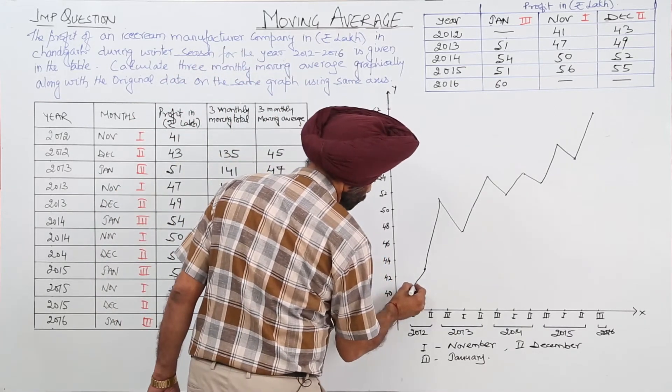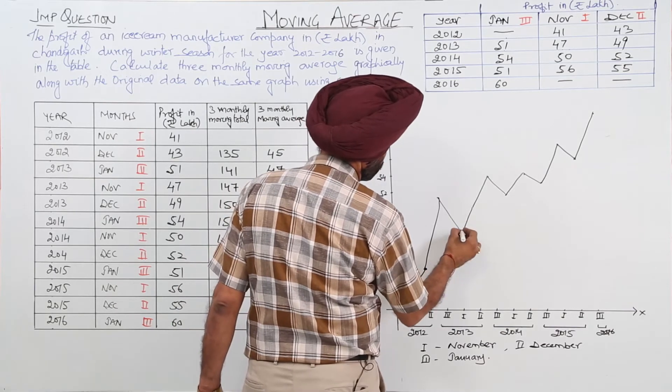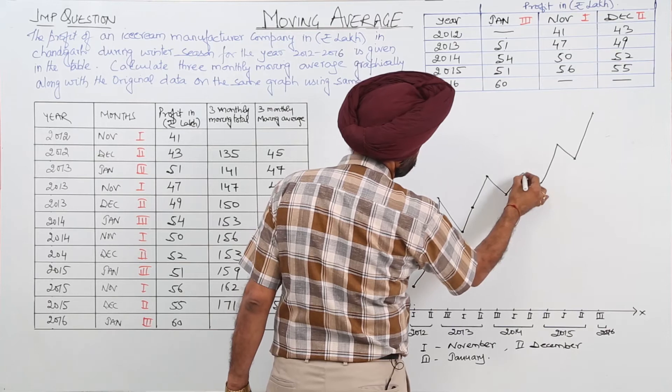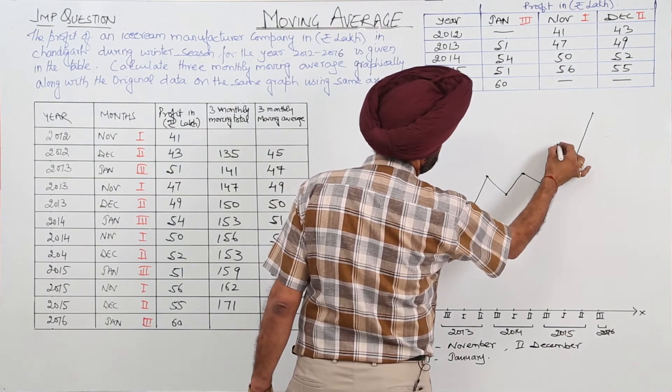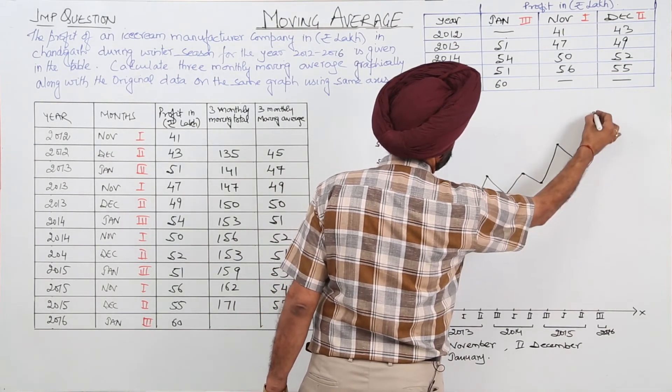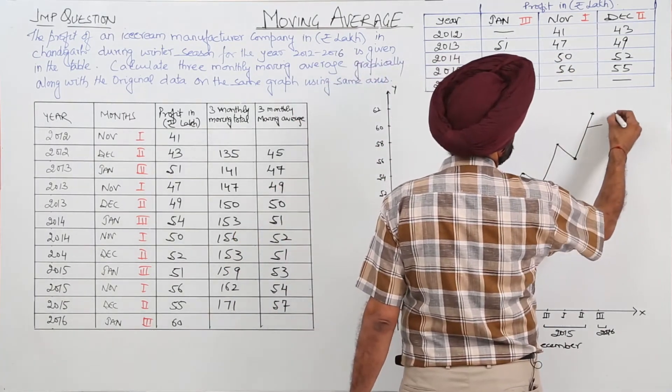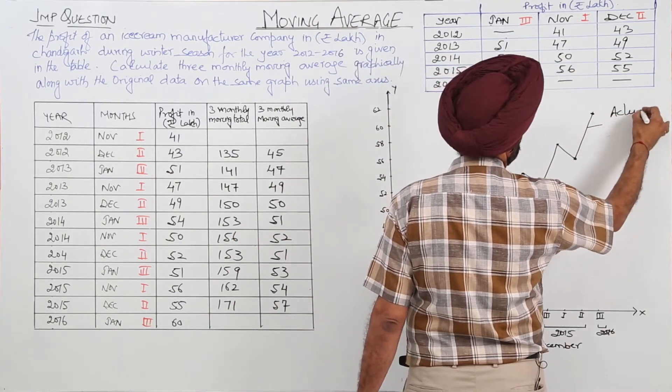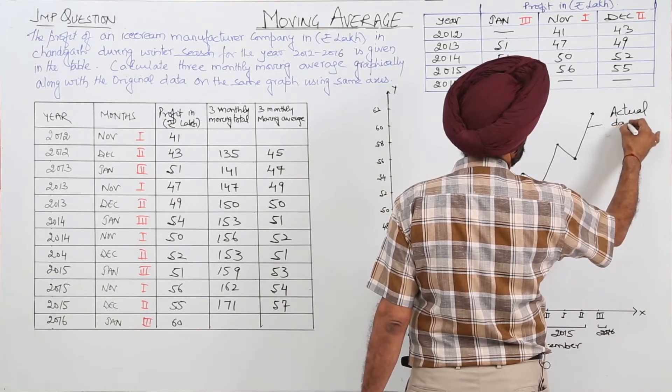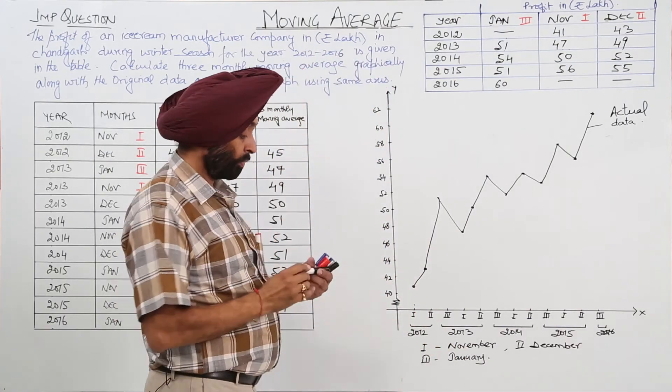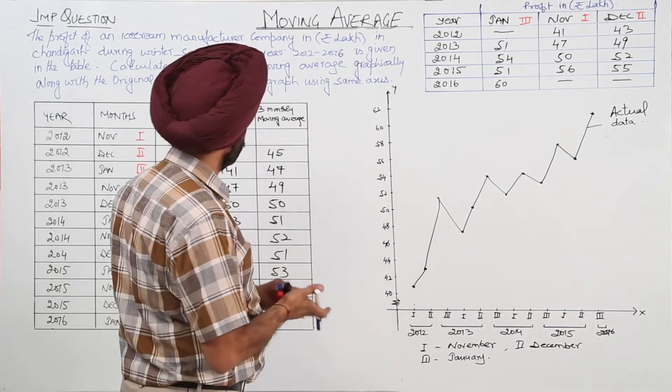Now these are the points. So this is the actual data. You can add histogram also. Now for the moving part.